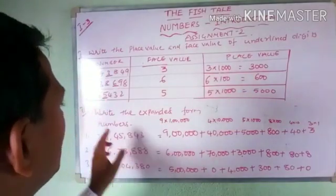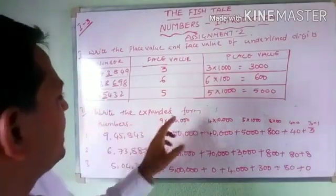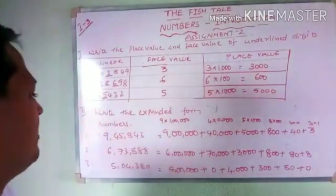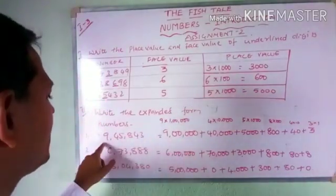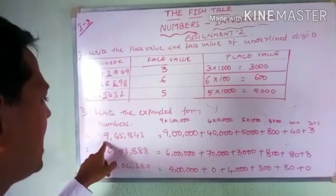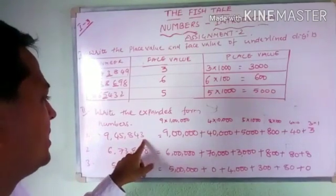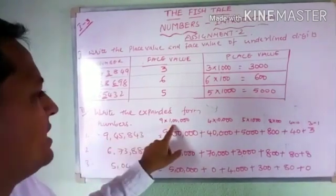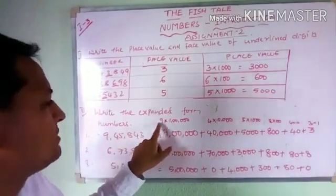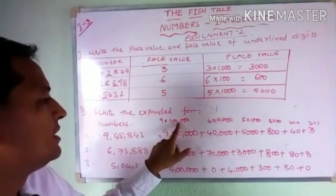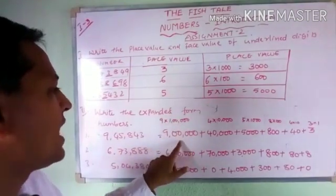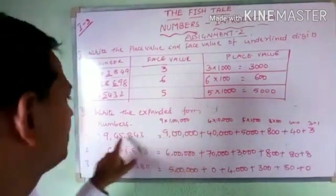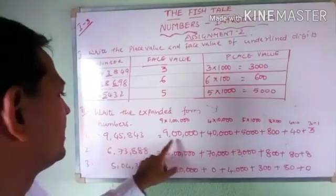Coming to the second question: write the expanded form of the numbers given below. The number here is 9,45,843. So 9 is in the lakhs place, so 9 is multiplied with 1 lakh — 9 lakhs will be the place value of this particular digit.